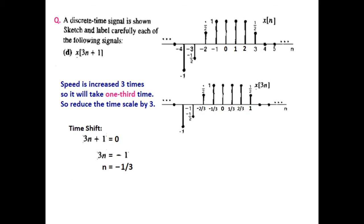We equate it to 0: 3n+1=0, so n=-1/3. Therefore, we have to move this signal left by 1/3, or we can add -1/3 to all these values to draw the new scale.